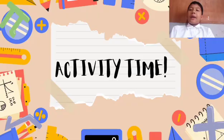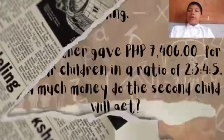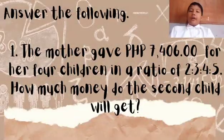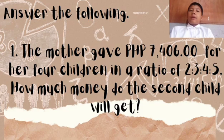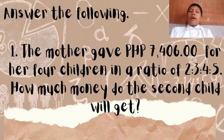Good! Now I'm going to give you some questions to practice at home. Answer the following. Number 1, the mother gave 7,406 pesos to her children in a ratio of 2 is to 3 is to 4 is to 5. How much money does the second child get?